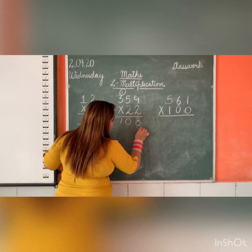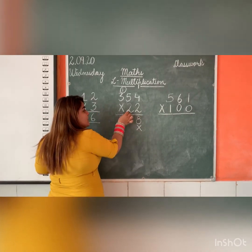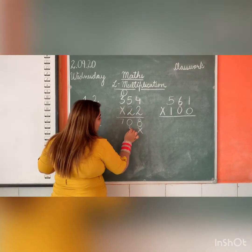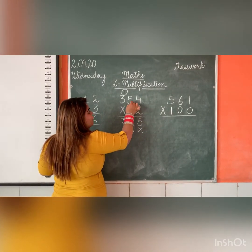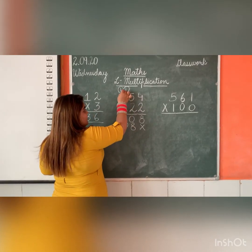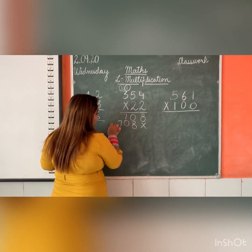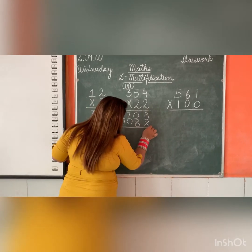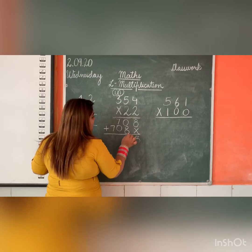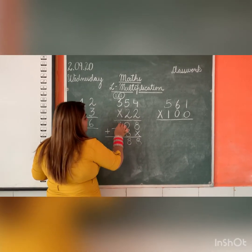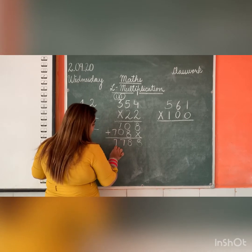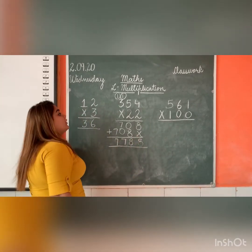Now we will put a cross here and take the next number. 2 fours are 8, 2 fives are 10, 2 threes are 6 plus 1 is 7. We will add these partial products: 8 plus 0 is 8, 8 plus 0 is 8, 7 plus 0 is 7, and 7 over here. So this is our product.